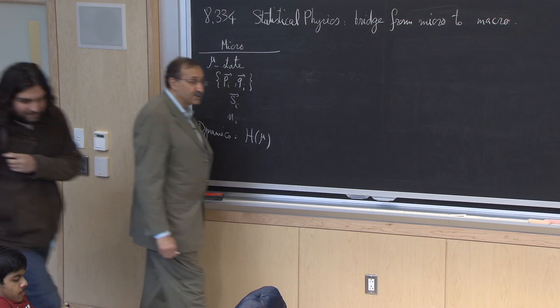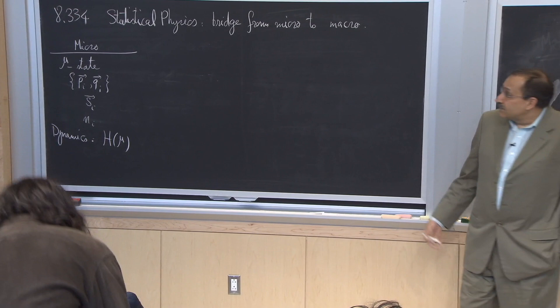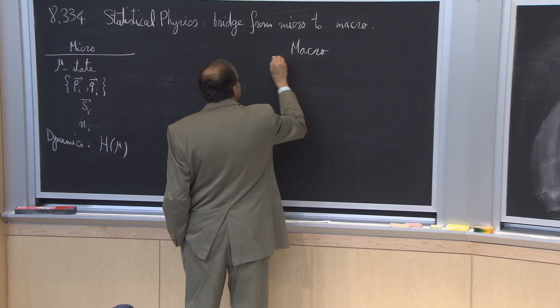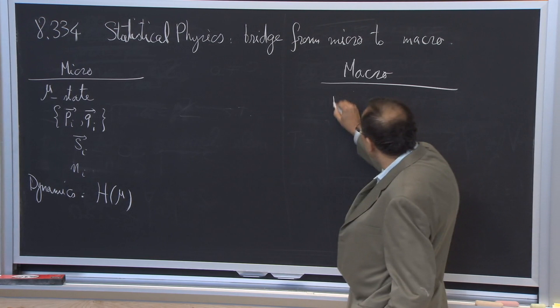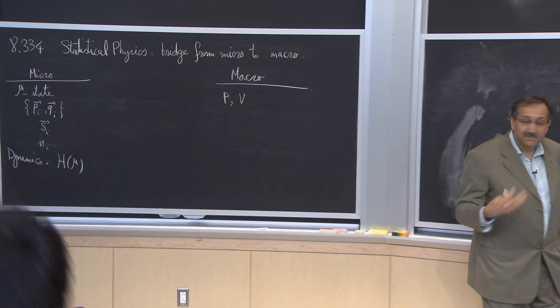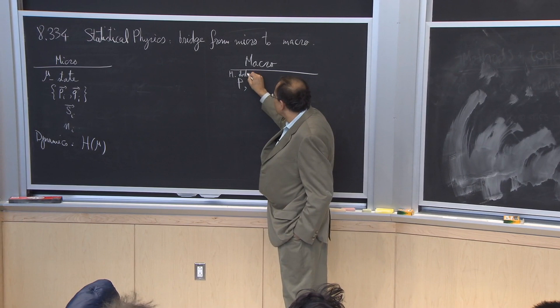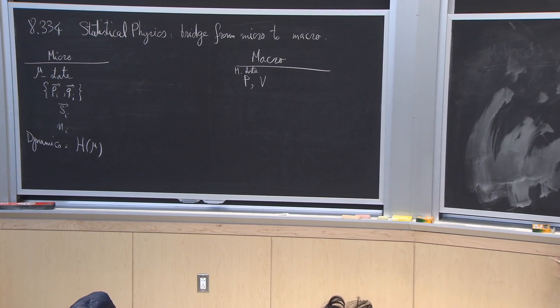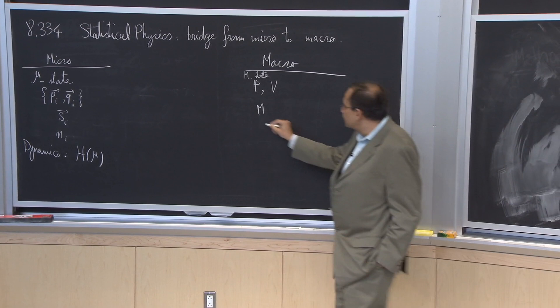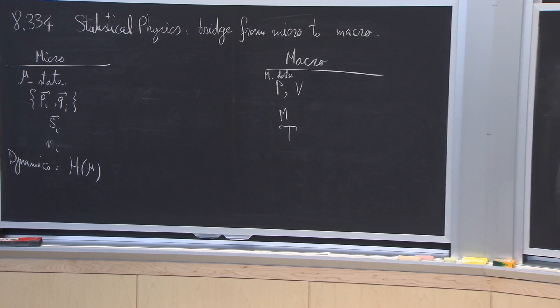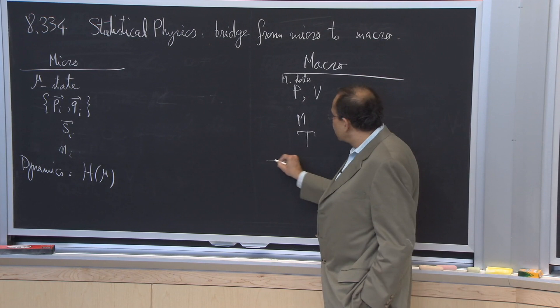At the other extreme, the macro world is described by completely different things. For example, if you are thinking about the gas, you have the pressure and the volume. Somehow the coordinates manage to define a macrostate characterized by a few parameters in equilibrium. If you have a collection of spins, maybe you will have a magnetization, and another important thing characterizing equilibrium is temperature.